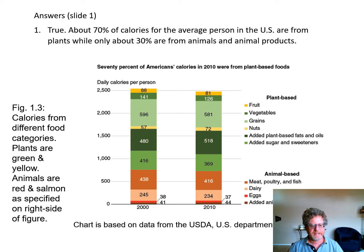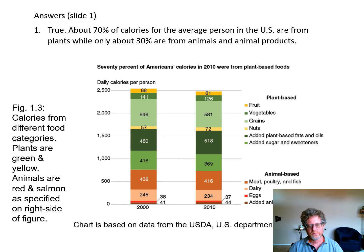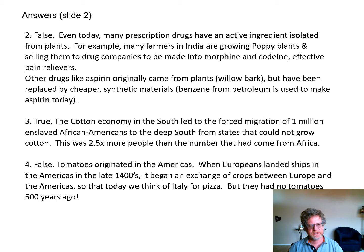Here's a figure that gives the average American's diet, from the U.S. Department of Agriculture. It's a bar graph from 2010. The green and yellow parts are from plants, broken down into different kinds of plant parts, and the red, pinkish, and salmon colors are all either animals or animal products. I've answered the other three questions here, and for some of these I'll expand on them in the homework.